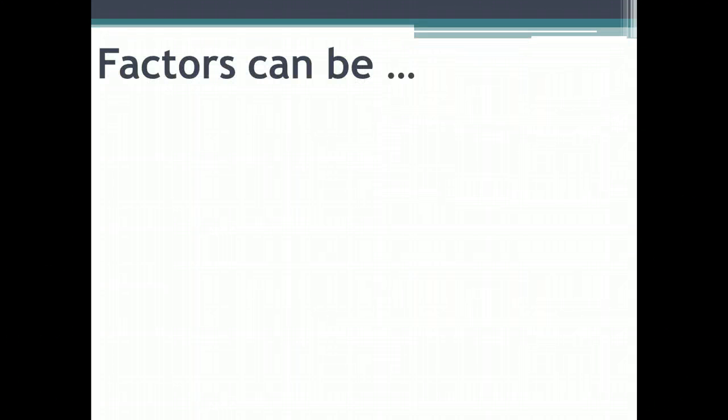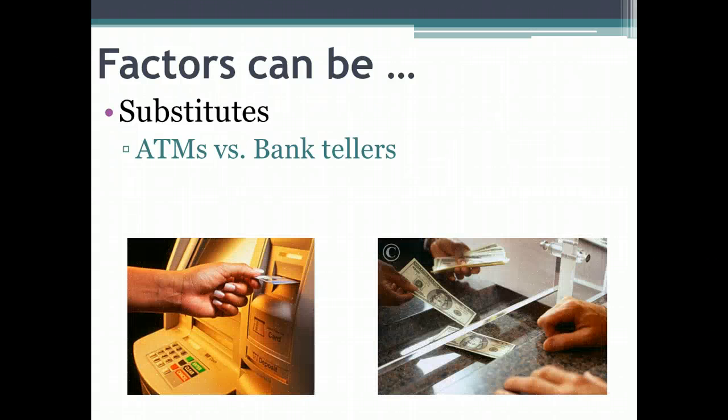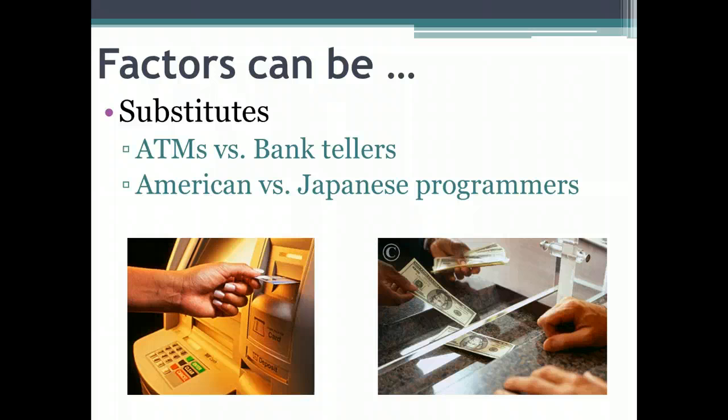We should recognize then that factors can be a substitute for each other in the sense that ATMs are a substitute for hiring bank tellers—that the capital is a substitute for labor—or American laborers are a substitute for Japanese laborers in the area of computer programming, for example.